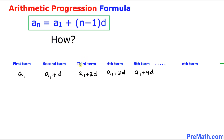Looking at the pattern: for the third term, the coefficient of d is 2; for the fourth term, it is 3; for the fifth term, it is 4. The coefficient of d is always 1 less than the term number. So when we put the nth term, this becomes a sub 1 plus n minus 1 times d.